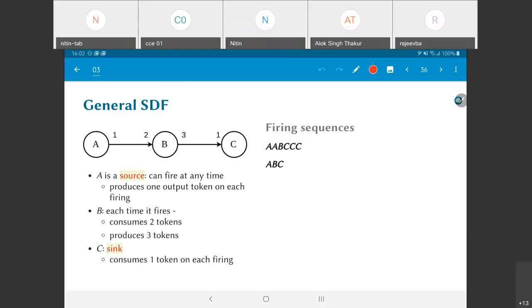The general form of SDF, static data flow, is one where the number of tokens that are produced and consumed can be different from one. These numbers marked on the edges indicate this.